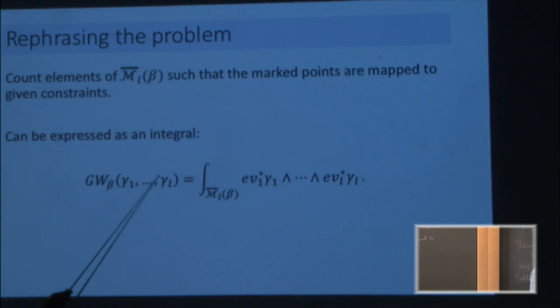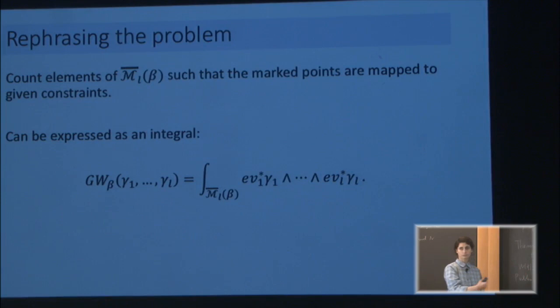The gammas in the integral represent the constraints I have in the range — some fancy expression that I integrate over the moduli space. Geometrically, this gives me the answer to the question of how many maps satisfy the constraints. These are just the evaluation maps at the marked points: you take a map with markings and evaluate at the given marked point.